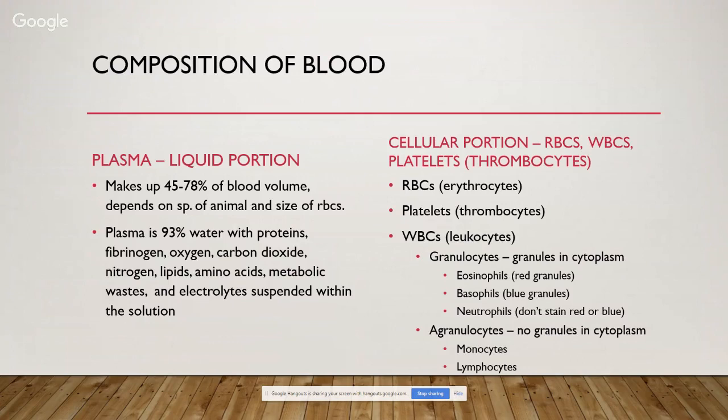The cellular portion contains red blood cells — erythrocytes — platelets, also called thrombocytes, and white blood cells or leukocytes. White blood cells are further differentiated into granulocytes, which have granules in the cytoplasm — those are eosinophils, which have red-staining granules, basophils, which stain blue, and neutrophils, which are neutral and don't stain red or blue. We also have agranulocytes — lymphocytes and monocytes — which have no granules in their cytoplasm.